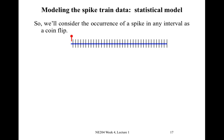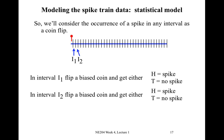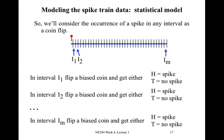In our model, we consider the occurrence of a spike in any sub-interval as a coin flip. We flip a biased coin in the first sub-interval and get either H — representing a spike — or T — representing no spike. We repeat this for every sub-interval up to I sub m, flipping our biased coin each time to determine spike or no spike.